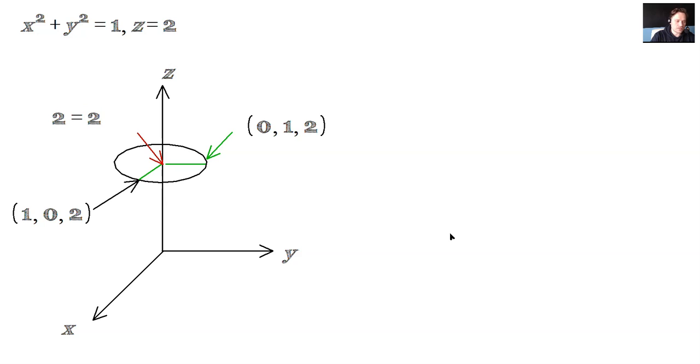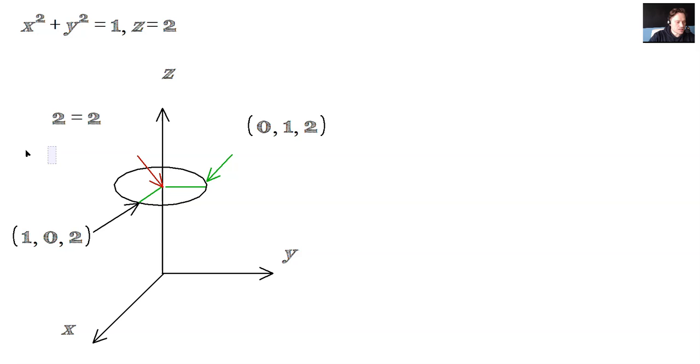However, is the other one satisfied? Let's calculate that off to the side here. So you have to plug it in and check it, in other words. 0 squared plus 0 squared, well, that clearly is not equal to 1.